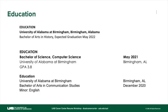Here are a couple of examples. The first example shows University of Alabama at Birmingham, Birmingham, Alabama, Bachelor of Arts in History, expected graduation May 2022 — that is formatted correctly. In another example, you'll see Bachelor of Science, Computer Science, May 2021, University of Alabama at Birmingham, with Birmingham, Alabama to the right and a GPA of 3.8 — also formatted correctly. A third example shows University of Alabama at Birmingham, Birmingham, Alabama, Bachelor of Arts in Communication Studies, minor English, graduation December 2020 — also correctly formatted.